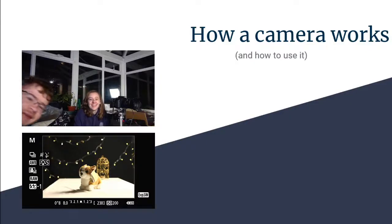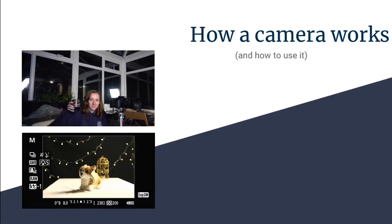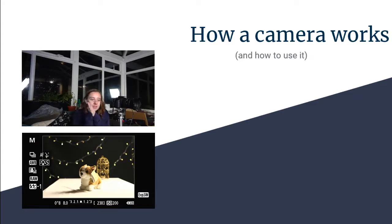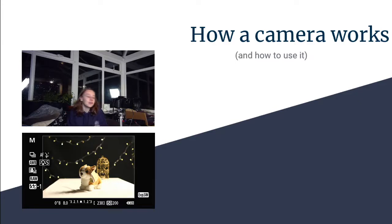Hello everyone, welcome to this one. This one is a very chilled and cozy one — we have drinks, we have pajamas on and massive slippers. I have tea, this should be quite relaxed. Today's session we're going to be talking you through how a camera works in terms of the settings it has and how to get the most out of your camera — essentially helping you get out of just using auto mode, because you get a lot more creative control of your pictures if you can use the camera properly.